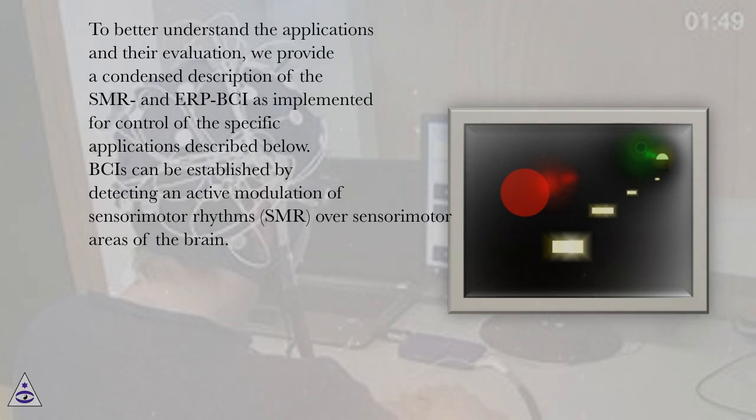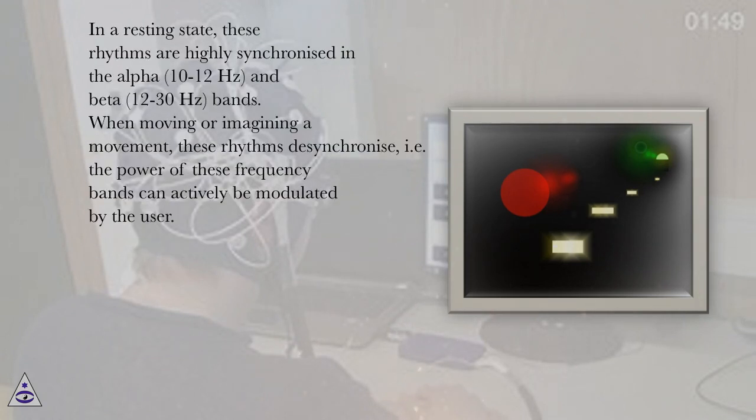BCIs can be established by detecting an active modulation of sensory motor rhythms, SMR, over sensory motor areas of the brain. In a resting state, these rhythms are highly synchronized in the alpha, 10 to 12 hertz, and beta, 12 to 30 hertz, bands.